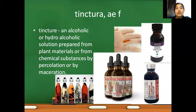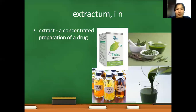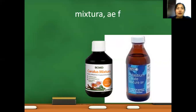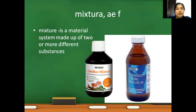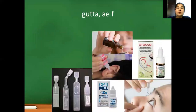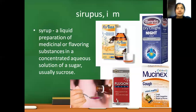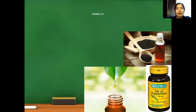Tinctura — tincture — an alcoholic or hydroalcoholic solution prepared from plant materials or from chemical substances by percolation or maceration. Extractum — extract — a concentrated preparation of a drug. Mixtura — mixture — a material system made up of two or more different substances. Linimentum — liniment — fluid ointment. Gutta — a drop — a volume of liquid regarded as a unit of dosage equivalent to one milliliter. Syrupus — syrup — a liquid preparation of medicinal or flavoring substances in a concentrated aqueous dissolution of a sugar, usually sucrose. Olium — oil.